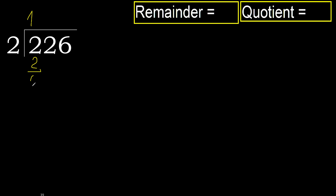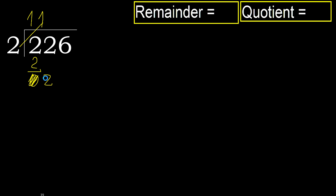Subtract: 0. Next, bring down 0 on this side. We have 2. 2 multiplied by 2 is 4, it is greater. 2 multiplied by 1 is 2. Subtract: 0. Next.